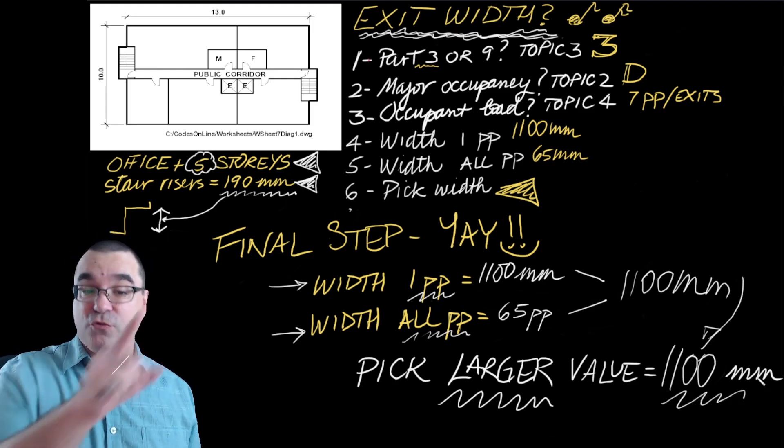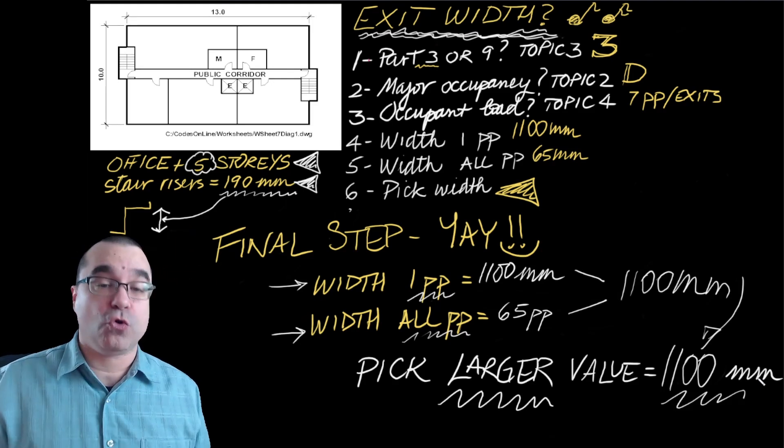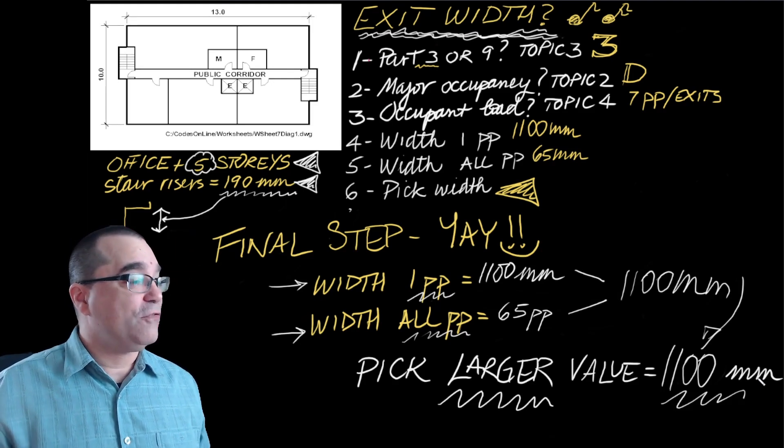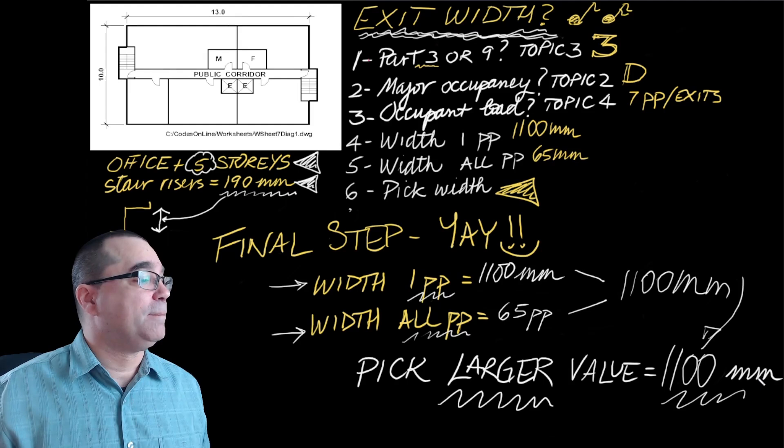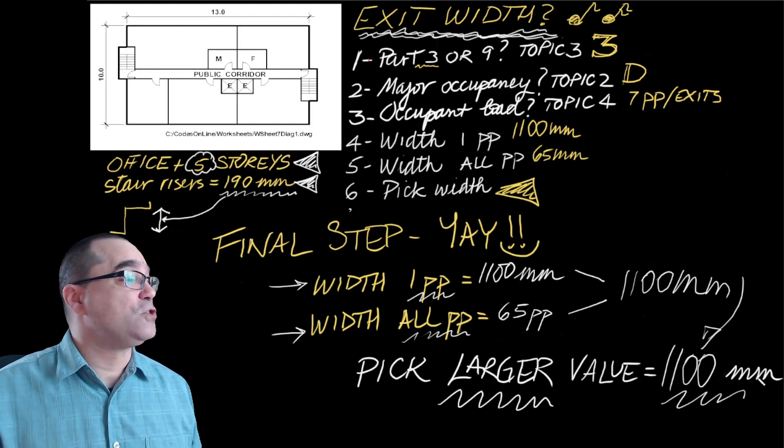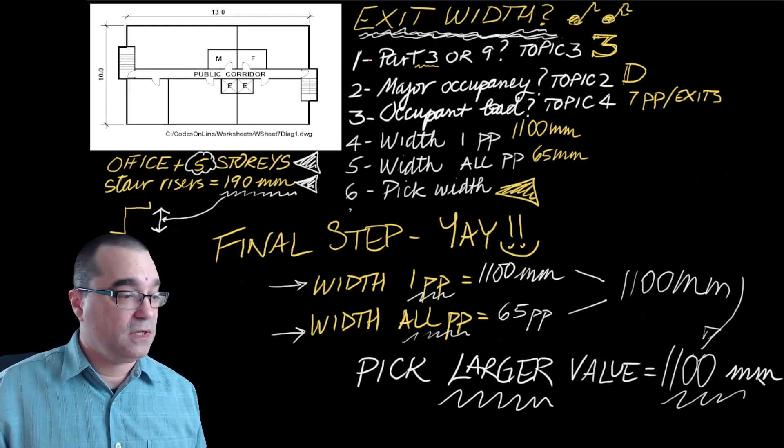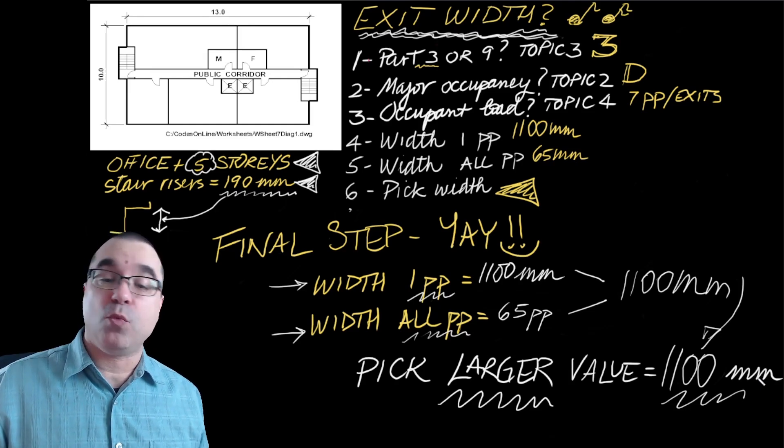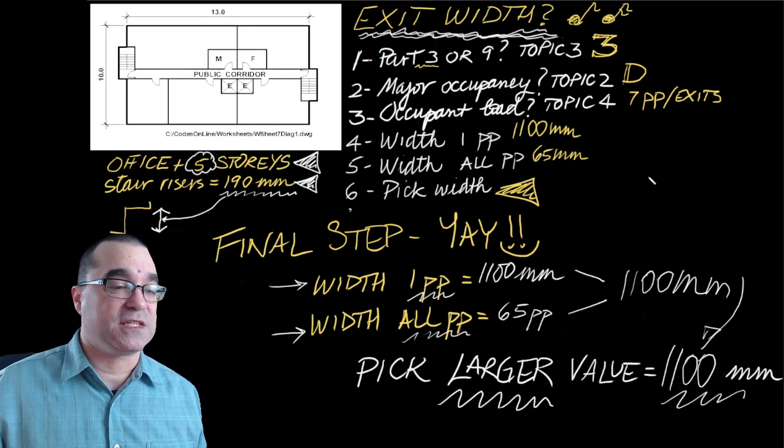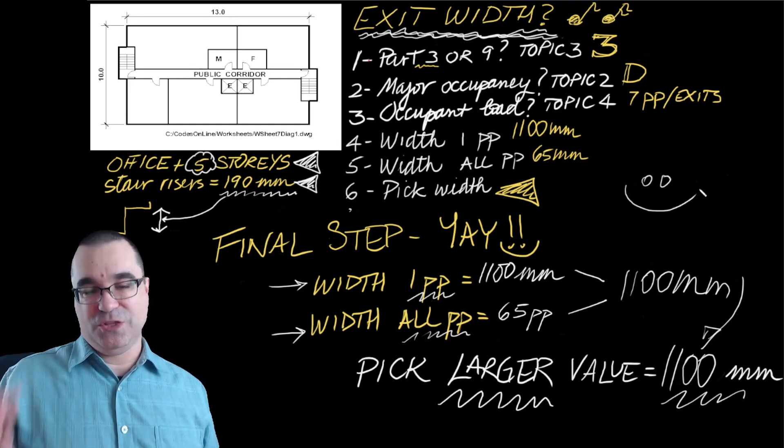The minimum width for the exit stairs for this floor plan, an office building five stories measuring 13 meters by 10 meters is 1,100 millimeters for each exit stairs. You got this.